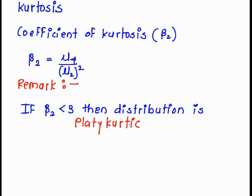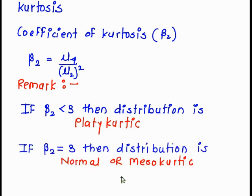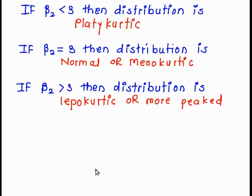If the value of beta 2 is less than 3, the distribution is called platykurtic. If beta 2 is equal to 3, the distribution is normal or mesokurtic. If beta 2 is greater than 3, the distribution is called leptokurtic.